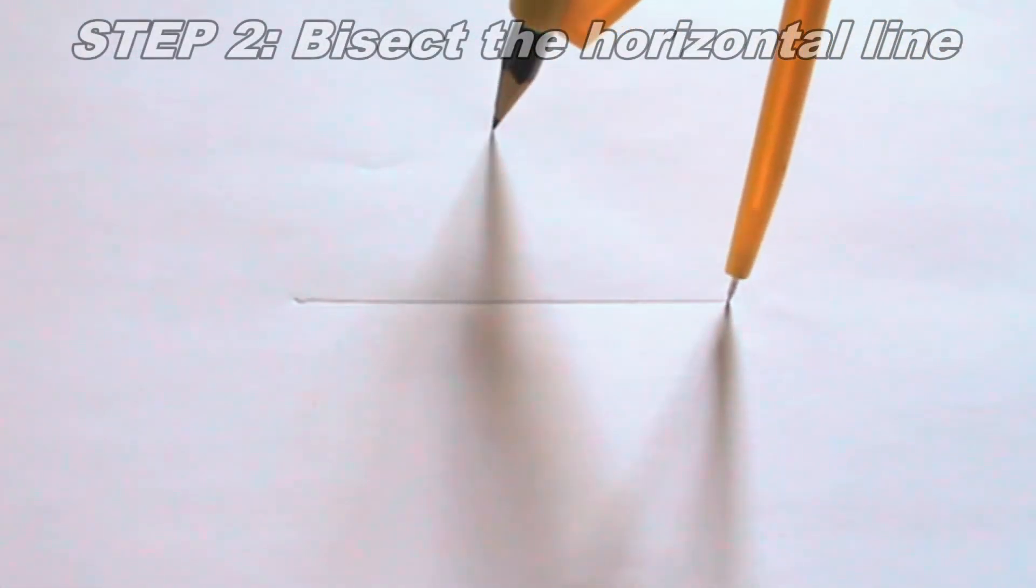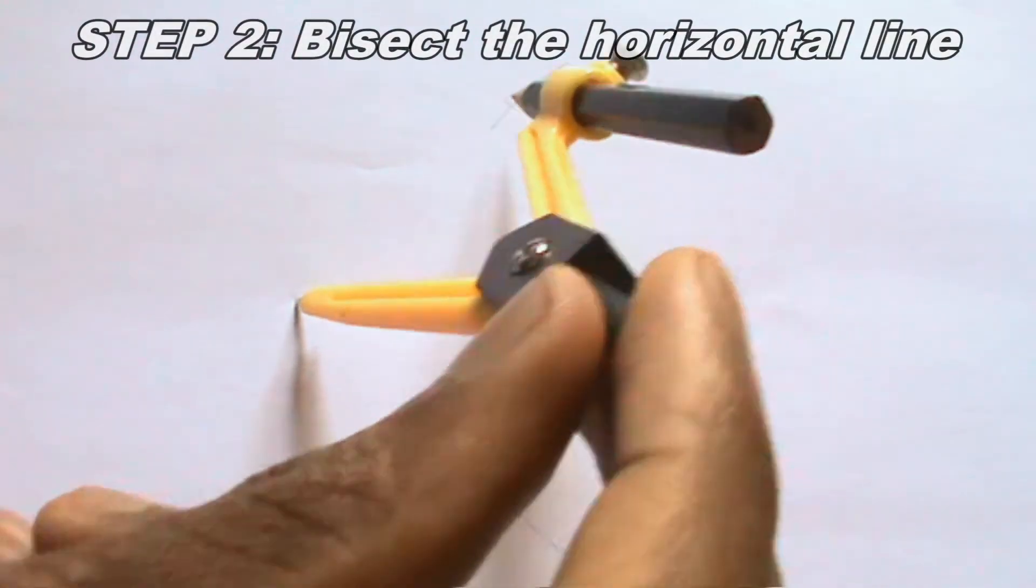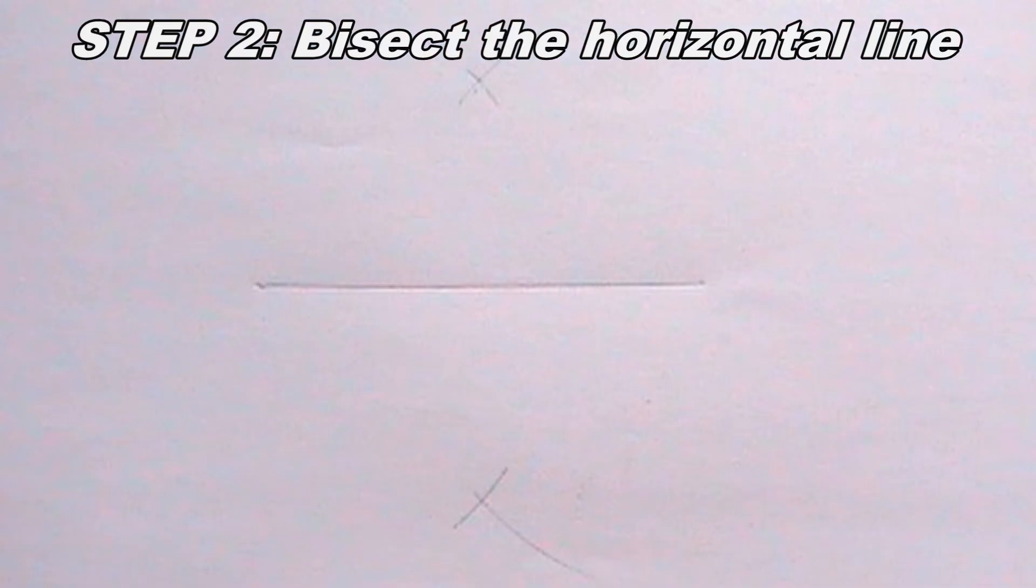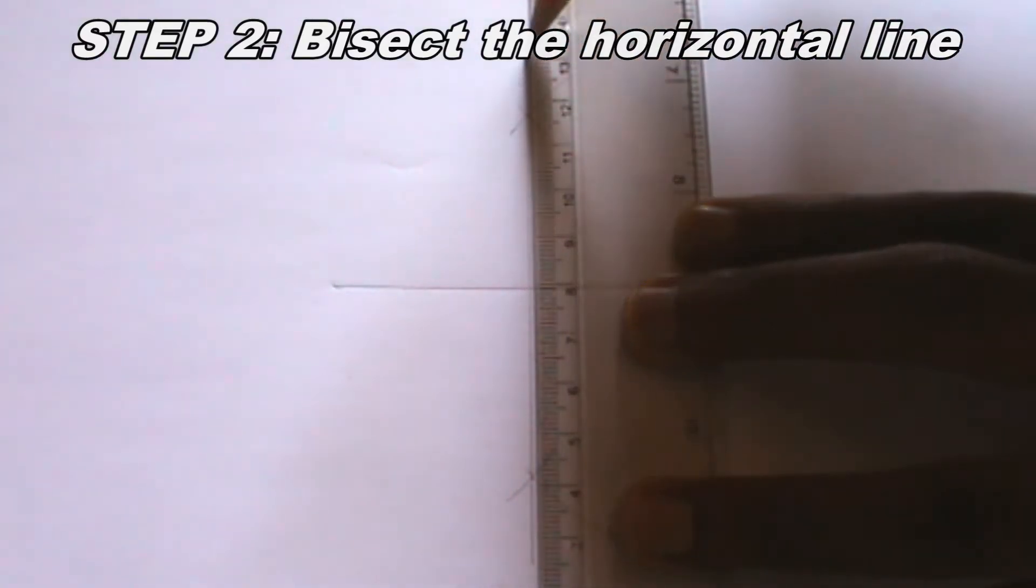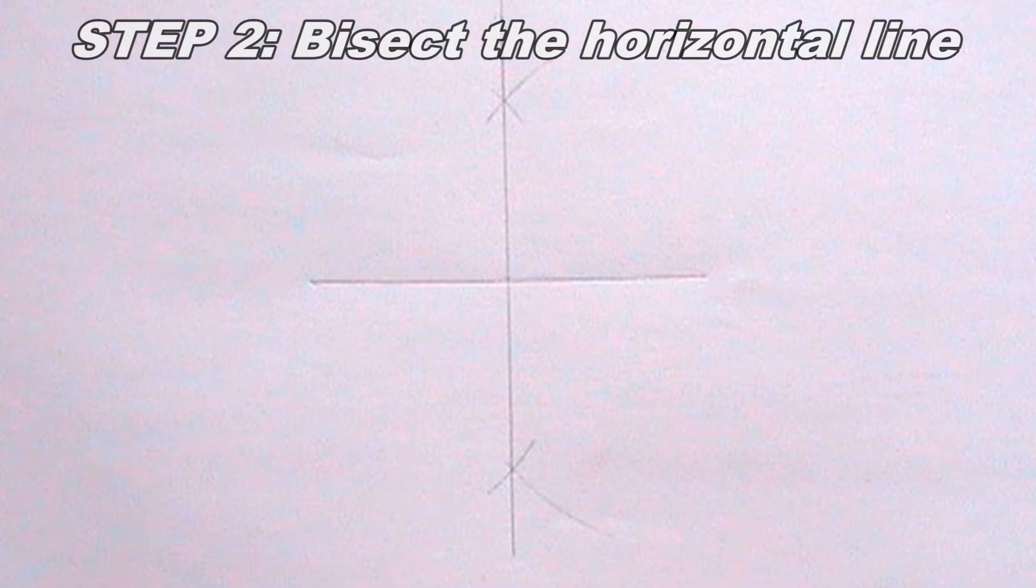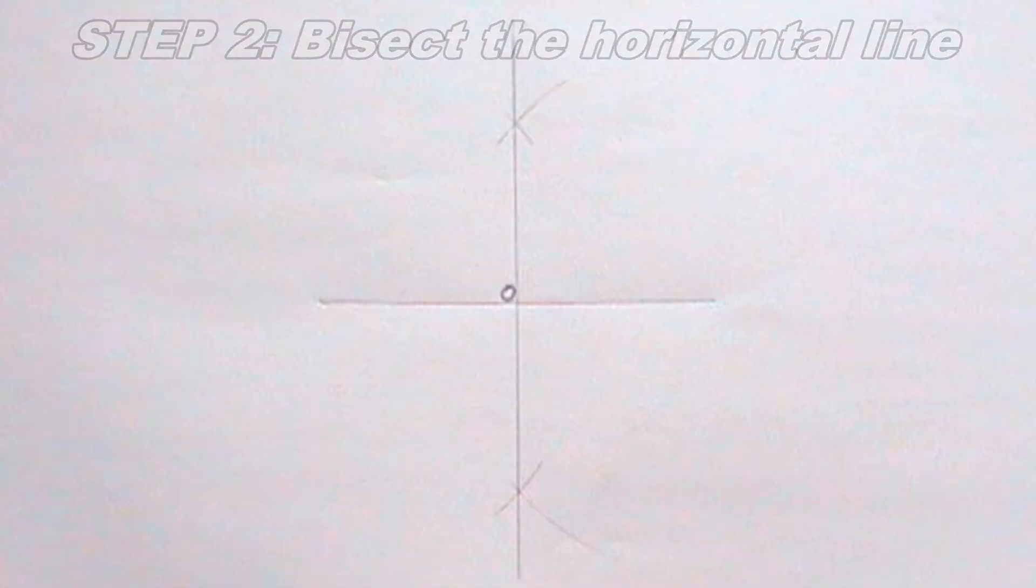Having done that, the next thing to do is to bisect the horizontal line. This step can be done this way. Now I will draw a line passing through the point where the line intersects at the top and at the bottom. This line will be vertical. I will label the point where the line I just drew intersects the previous line, O.